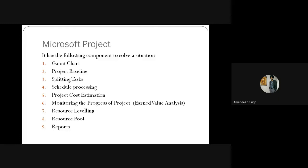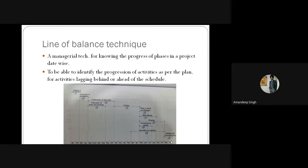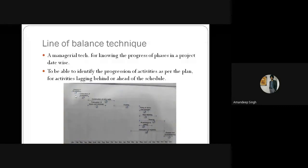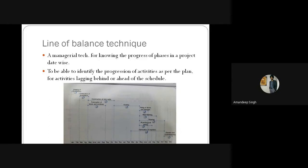A Gantt chart is very similar to a Line of Progress (LOP) chart, where we check the progress of the project along a line. Starting from January 2020, we can see the progress of the chart through December 2020 or December 2021.